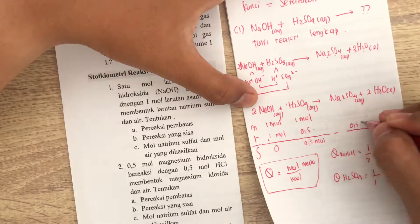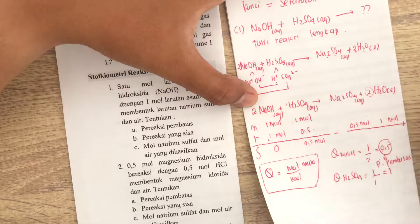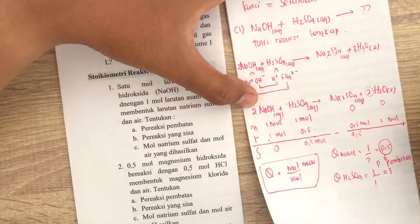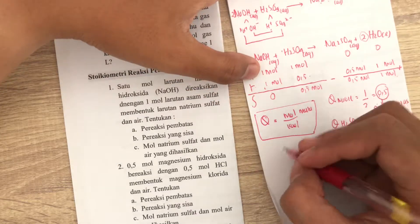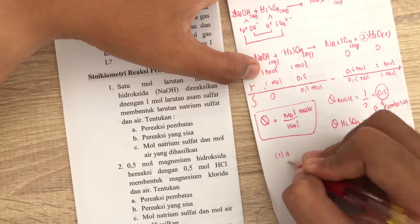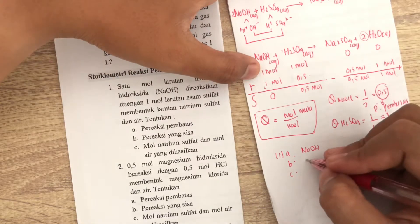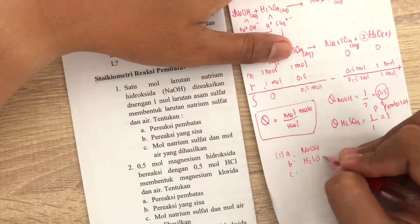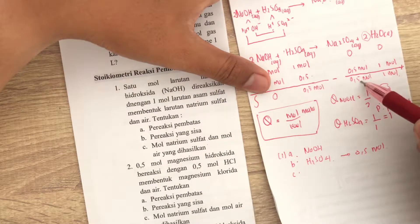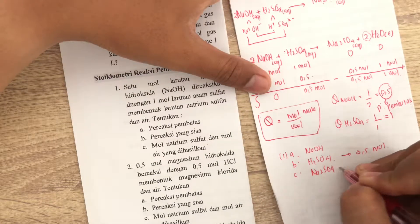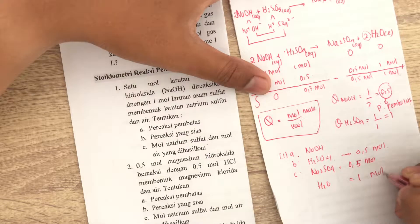Na2SO4 kan koefisiennya 1, berarti ini sama-sama 0.5 mol. Sedangkan di ini, yang H2O kan koefisiennya 2, berarti jadi 1 mol. Ini 0, karena produk, kan mula-mulanya 0 produk. 0.5 mol, 1 mol. Gitu. Berarti, untuk yang jawaban nomor 1, 1A, BC, reaksi pembatasnya siapa? Reaksi pembatasnya adalah NaOH. Pereaksi yang sisa? Ini pereaksi sisa. H2SO4. Jumlahnya berapa? 0.5 mol. Mol natrium sulfat. Ini natrium sulfat kan berarti Na2SO4. Dia adalah 0.5 mol. Sedangkan untuk H2O, dia adalah 1 mol. Gitu.